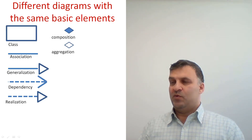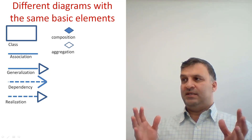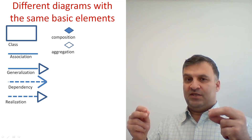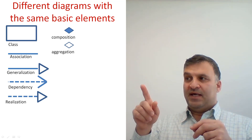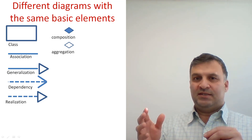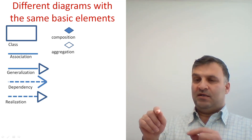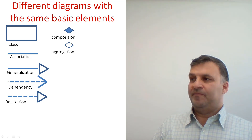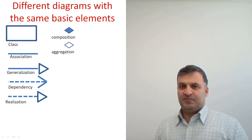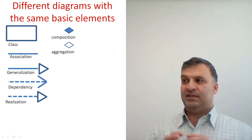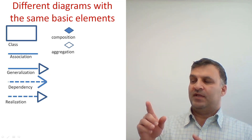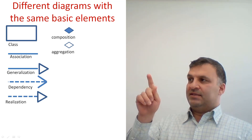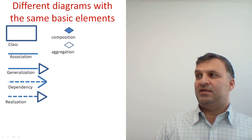We can remember that in UML diagrams, the form of the class is a rectangle. Association is a relationship between two classes. Generalization, or inheritance, is a hollow triangle with a filled line. Dependency is a dashed arrow. Realization is a relationship between two abstract entities, represented with a hollow rectangle and dashed line. Composition is a filled diamond. Aggregation is a hollow diamond.